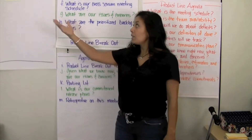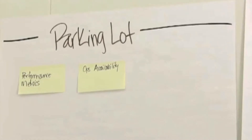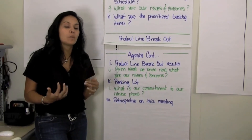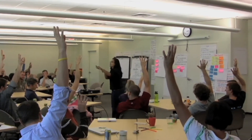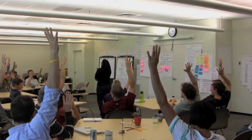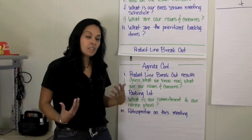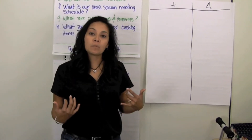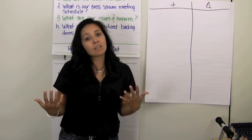Next we look at the parking lot, making sure we go through all parking lot items, revisit them, and deal with any issues before the meeting ends. Then I ask the team what their commitment is to their release plans — asking for a fist-to-five vote. The last item is a retrospective on the meeting itself, which is very important in shaping the release planning meeting for the next release. I get feedback on what worked well and what didn't, and this has really helped shape our agenda to what it is today.